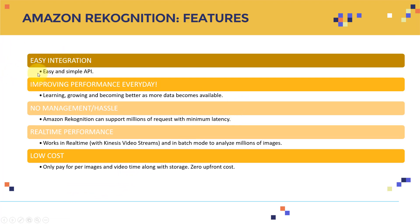The features include easy integration — there is only a very simple API. Performance improves every day, so Amazon Rekognition is becoming better as more data becomes readily available. There is no management or hassle — Amazon Rekognition can support millions of requests with minimum latency. There is also real-time performance, as it can work in real time with Kinesis Video Streams.